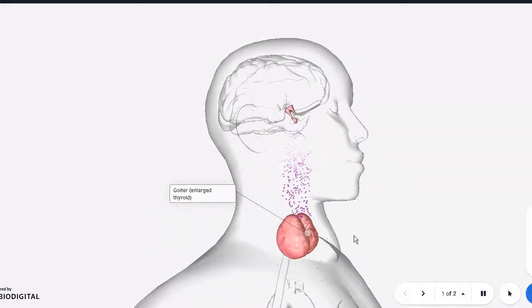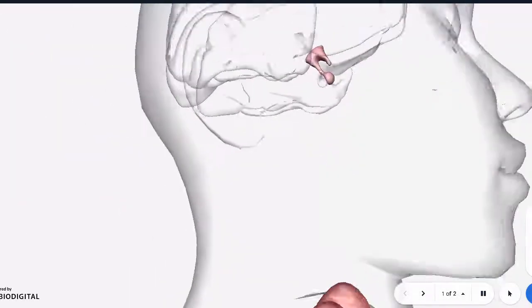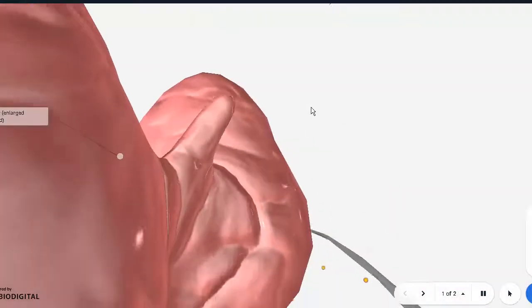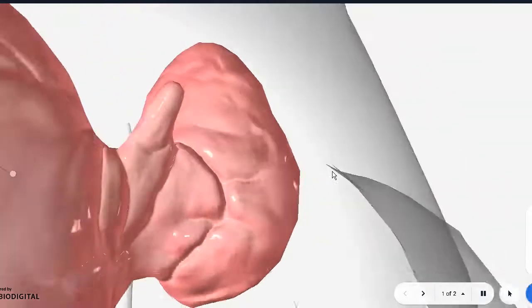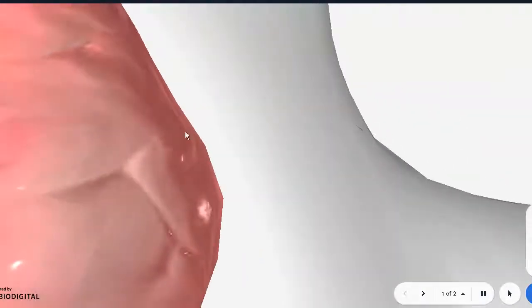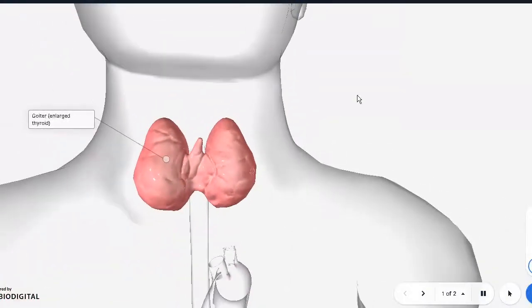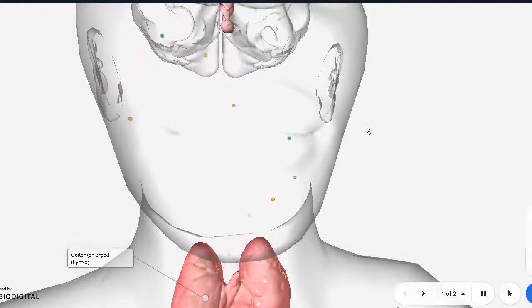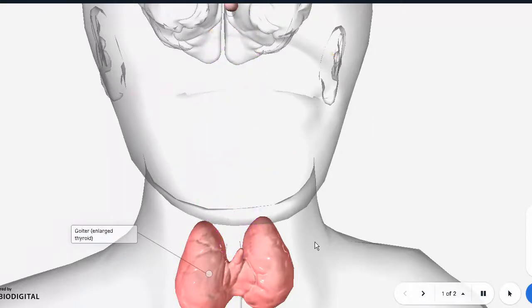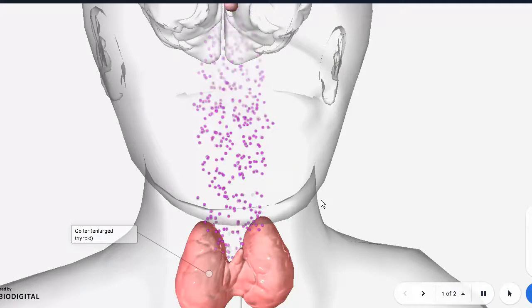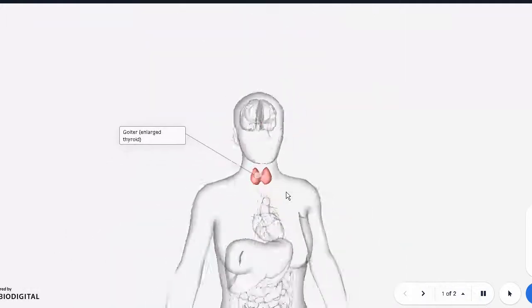On examination you notice there is a lump in front of her neck. When you palpate the lump, it is normally diffused but at certain points you may notice certain nodular type outgrowths. Furthermore, on examination you may notice that the area is hot and tender. On investigating, we pick up that the levels of T3 and T4 are low while that of TSH is high.